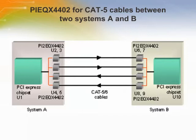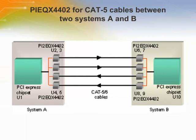In this figure, the PCI Express X8 systems A and B are using a CAT5 or CAT6 cable — 2 meters to 5 meters depending on cable quality — while guaranteeing the PCI Express compliance test at the input of U1 and U10. This combination of using a PI2-EQX4402 and a CAT5 cable provides an optimized cost reduction solution for cable applications.